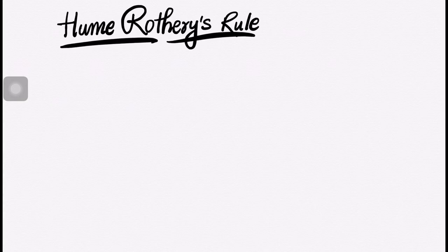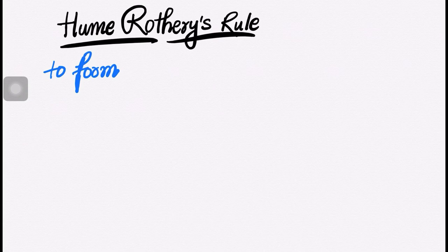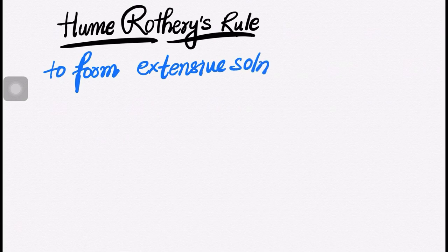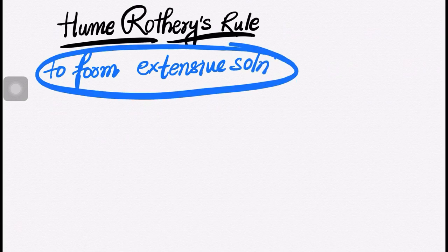Hume-Rothery rule — why is this rule followed? Basically, to form an extensive solution, it means there should be more solubility — very high or appreciable solubility. This is what the Hume-Rothery rule addresses. This is generally considered an extensive solution.